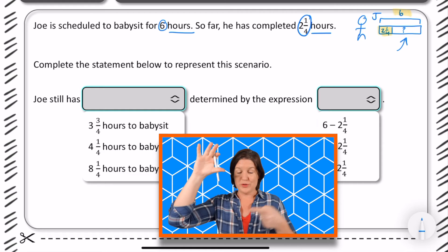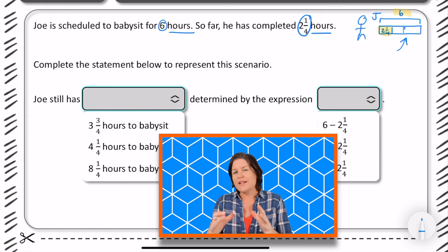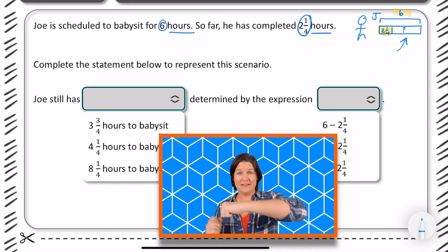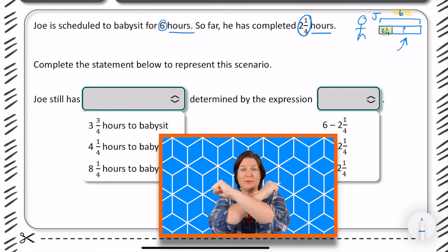This is called a part-whole problem. Part-whole, and we're trying to figure this out. Which means what operation are we doing here? Are we subtracting, adding, or multiplying?